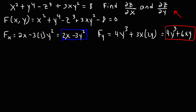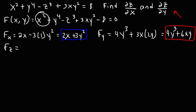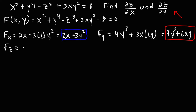I noticed that I made a small mistake — this should be positive and not negative. So now let's move on to f sub z. The only term with a z variable is negative z to the third. The derivative of x squared, y to the fourth, 3xy squared, and negative 8 are all going to be 0. So f sub z is going to be negative 3z squared.